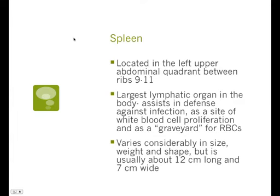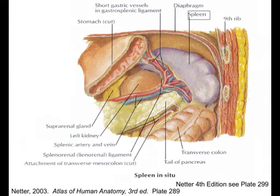The spleen is located in the left upper abdominal quadrant between ribs 9 through 11 — that I want you to know. It is the largest lymphatic organ in the body, assists in defense against infection, is the site of white blood cell proliferation, and is a graveyard for red blood cells. It varies considerably in size, weight, and shape, but is usually about 12 centimeters long and 7 centimeters wide, and it sits just under your diaphragm.